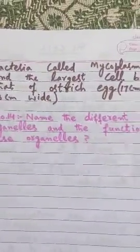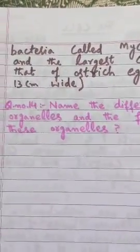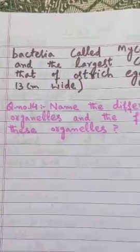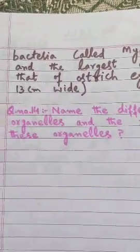Some cells are very small, such as mycoplasma, which is a bacteria, at 10 µm. The ostrich egg is a very large cell — 17 cm long and 13 cm wide — visible to the naked eye, whereas mycoplasma requires a high-resolution compound microscope. So we have variation in shape as well as variation in size of cells. Now we have the 14th question, which we will see in the next video. Thank you very much.